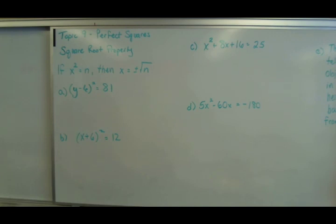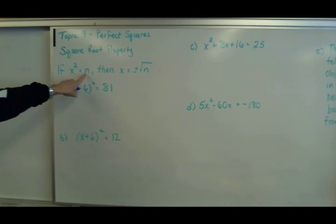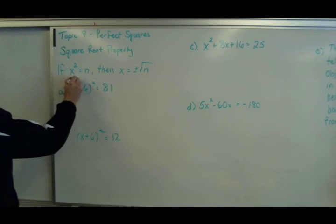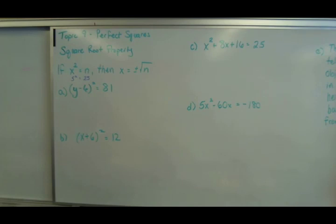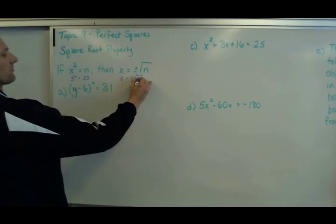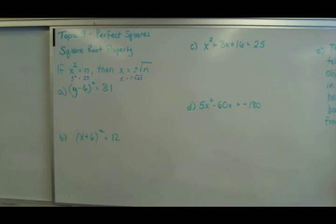Now with perfect squares we have something called the square root property. The square root property says if you have a number squared and it is equal to an n—think 5 squared equals 25—then what that property says is x, which is 5, is equal to the positive negative square root of 25. So if I were to take the square root of 25, my answer would be 5.